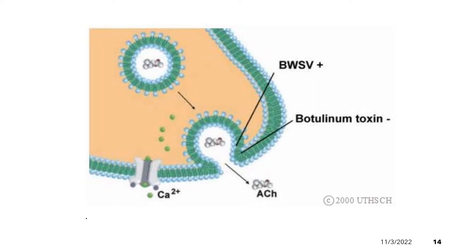Many toxins are known to interfere with these processes and are effective in preventing acetylcholine secretion. The diagram shows botulinum toxin and black widow spider venom. Black widow spider venom has a stimulatory effect — it will stimulate the release of acetylcholine at the synaptic cleft. On the other hand, botulinum toxin inhibits the secretion of acetylcholine. Botulinum toxin is considered one of the most poisonous biological substances known — it is a neurotoxin produced by the bacterium Clostridium botulinum.